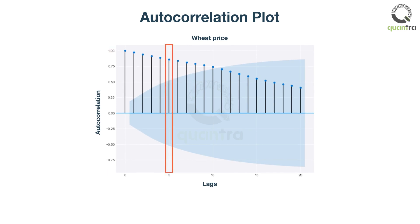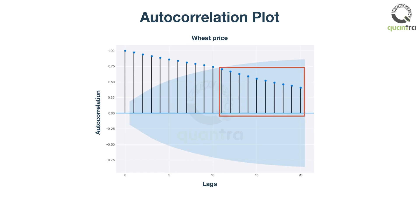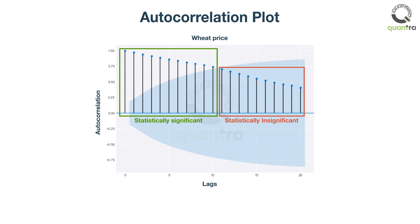From this plot, can you tell me the autocorrelation with five-months lagged values? Yes, it is approximately 0.85, which you can find by looking at the height of this vertical line. You might be wondering what this blue shaded region is. You can think of anything inside the band as statistically insignificant. In other words, autocorrelation values outside the blue region are not a fluke. Up to the tenth lag, values are outside the blue region, so up to past 10 months' values have direct and indirect impact on the current prices.